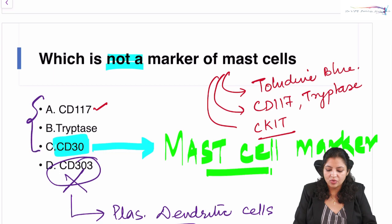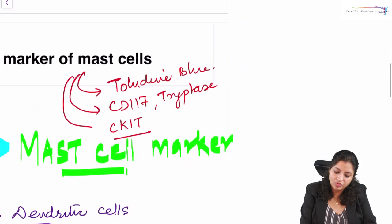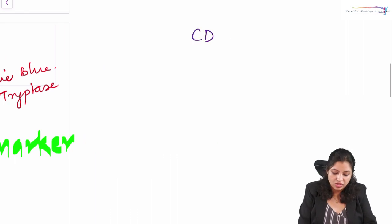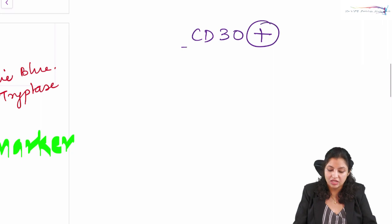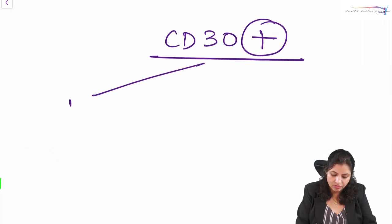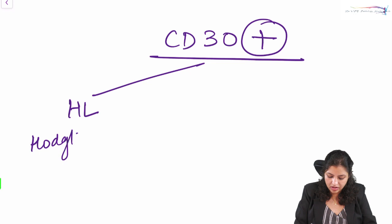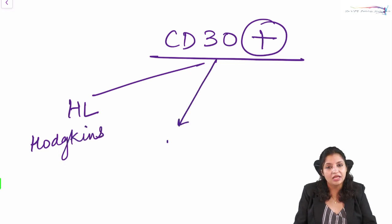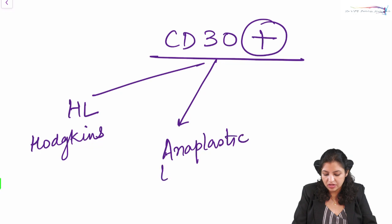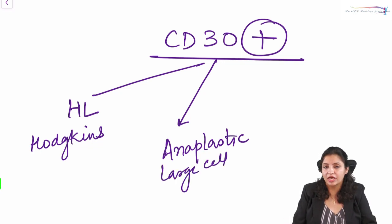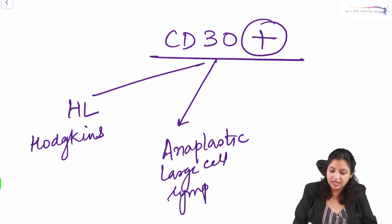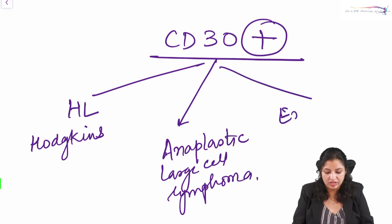CD30 positive tumors you should know: Hodgkin's lymphoma — everybody should know that — anaplastic large cell lymphoma, embryonal carcinomas of the testis or female genital system, and the recently added entity: neoplastic mast cells. So neoplastic mast cells are also CD30 positive. These are the updated CD30-positive entities you should all know.